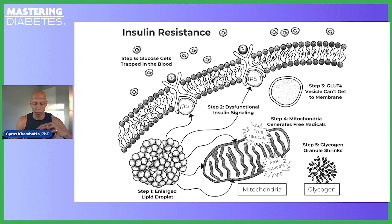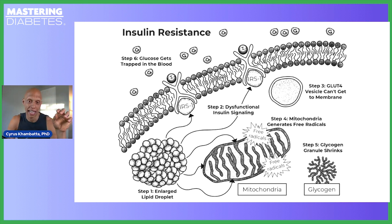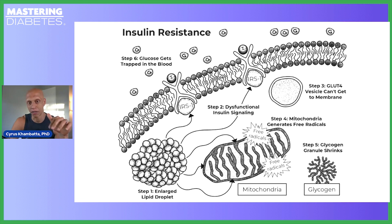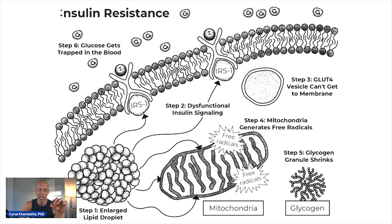This lipid droplet begins to grow over time as more fat appears in your blood because you ate a high-fat diet. As it grows, there are a couple of breakdown products or derivatives that start to impair the intracellular side of the insulin receptor. These lipid metabolites cause alterations to the insulin receptor from the inside of the cell and inhibit IRS-1, which stands for insulin receptor substrate one. All you need to know is that it makes the insulin receptor less functional.